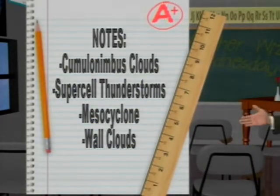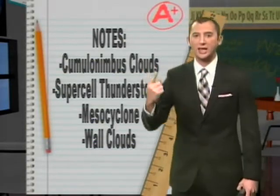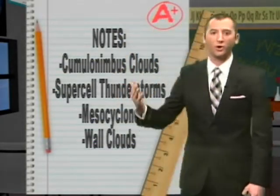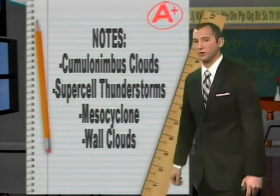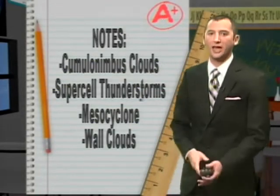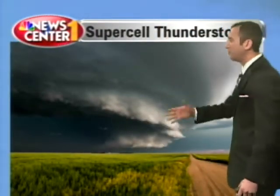That is what defines a supercell thunderstorm — it has rotation in the middle, the core of the storm, along with all the updrafts and downdrafts. Attached to that cumulonimbus cloud, that supercell thunderstorm will have a wall cloud, and that will be where the tornado falls. This is an example of a supercell thunderstorm — it's ugly but kind of picturesque at the same time. Not always this well defined, but you have the shelf cloud there, and you can see the wall cloud very close to the surface. That is where the tornado would start to form.